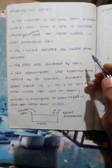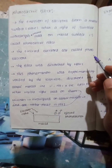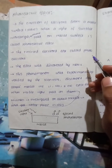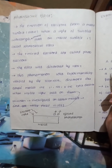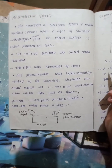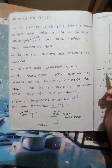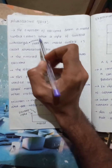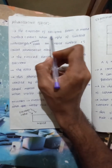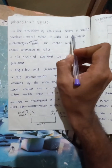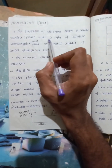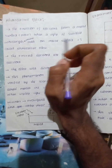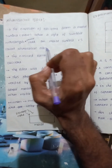Photoelectric effect is important — it will be a little bit of a 1-mark question, so this is very easy. The emission of electrons from a metal surface or plate when light of suitable wavelength falls on a metal surface is called the photoelectric effect.